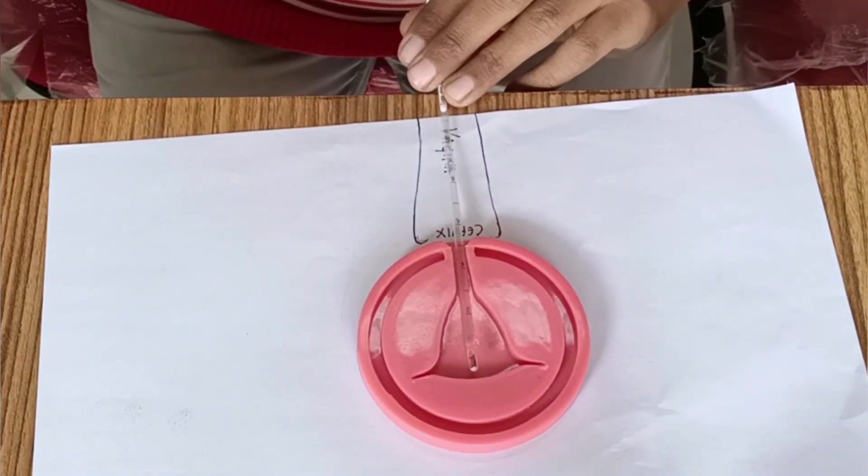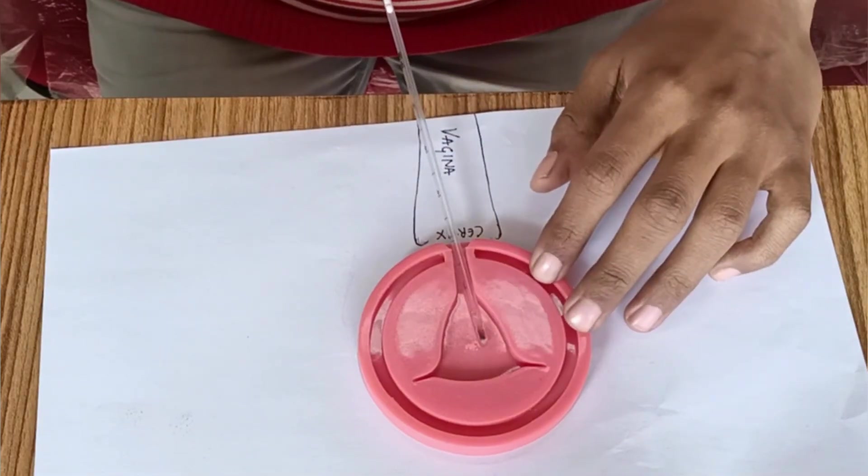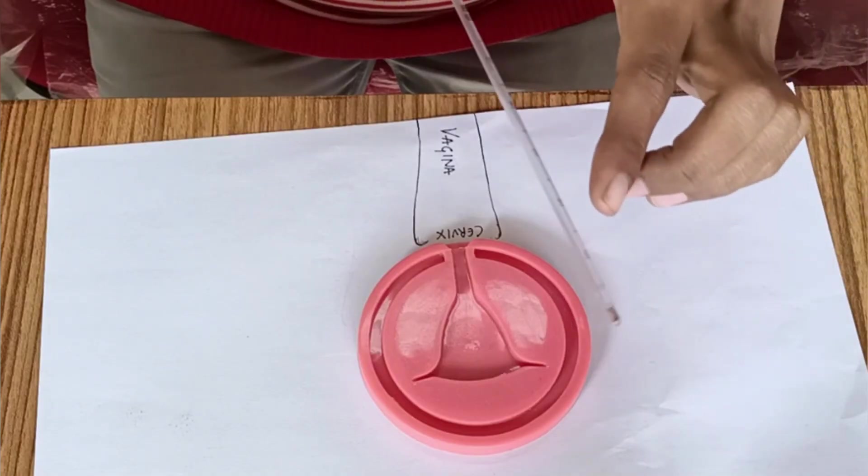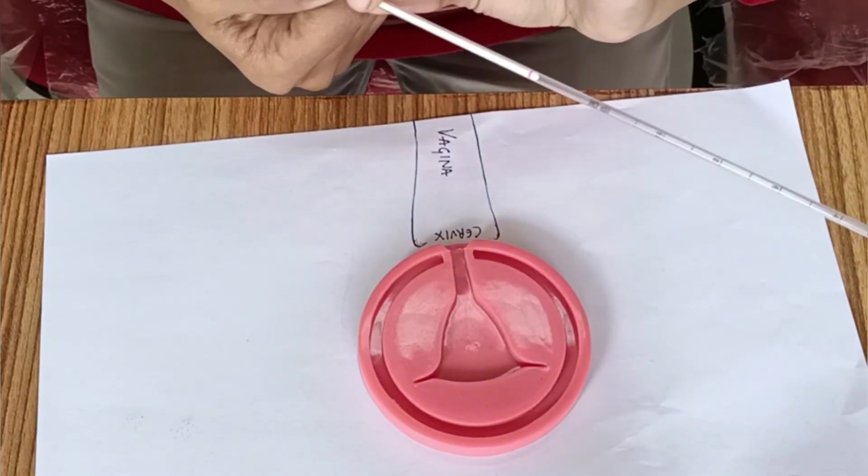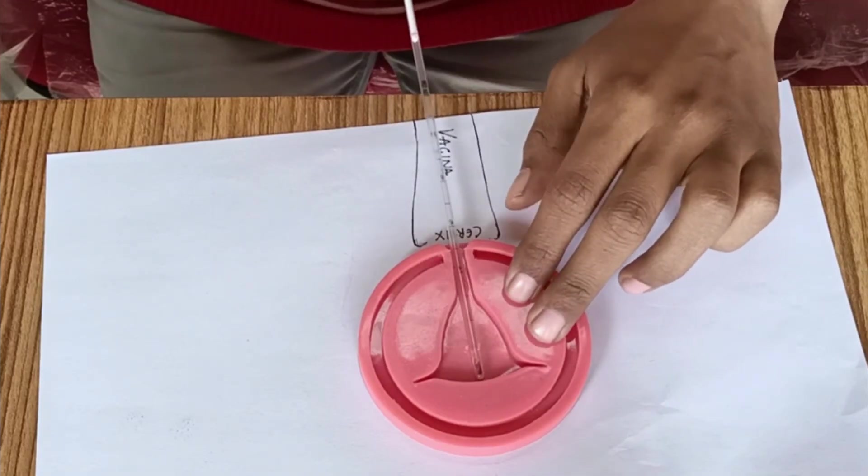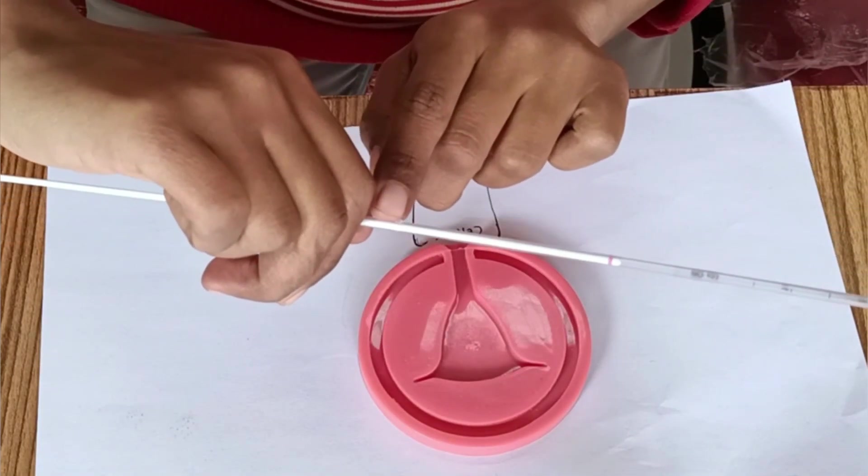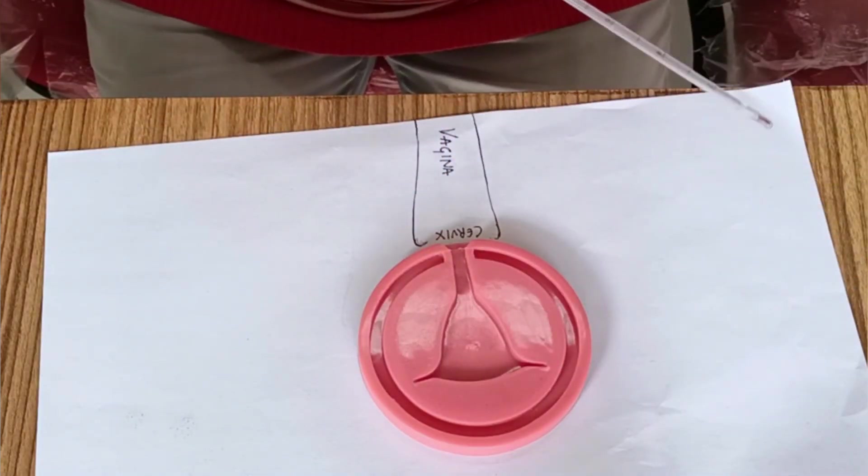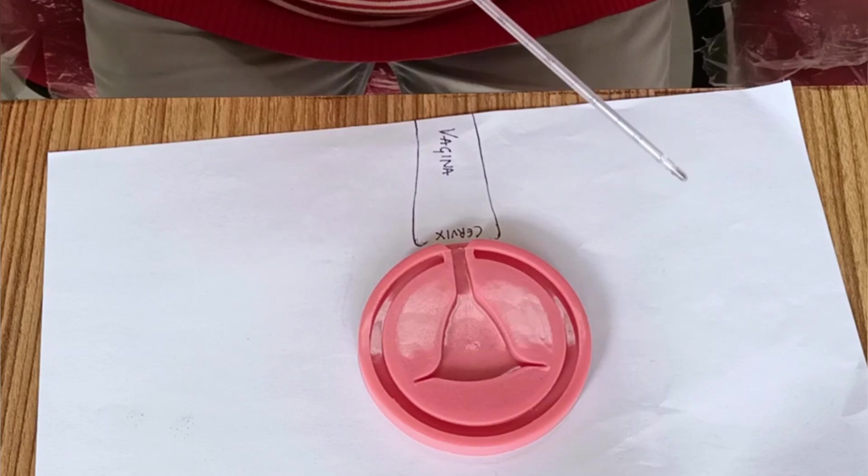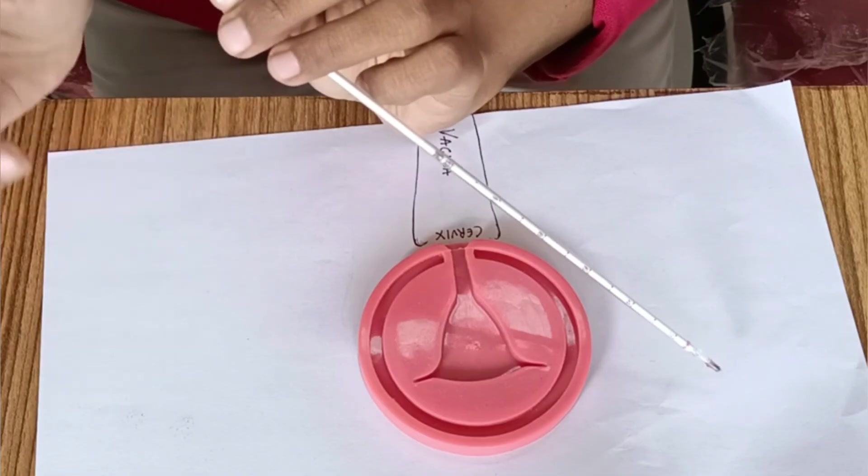Now without breaking the suction, remove the Pipelle and have a firm hold over the place where the stylet and the outer tube meet. So this transparent portion will be filled with the curettings. And now you break the suction and push the stylet back inside, and the content of the sample will come out through the tip of the Pipelle, the same from where the curettings entered.